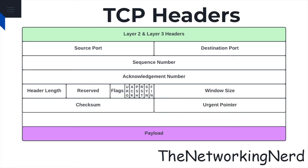The urgent pointer points to urgent data within the TCP segment and informs the receiving host about any time-sensitive or high-priority data that requires immediate attention. The options header provides additional functionality or options for TCP communication. Common options include maximum segment size, timestamps, and window scaling. These options enhance the performance, efficiency, and reliability of TCP communication.